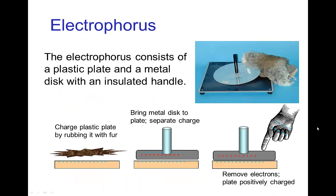We can use electrostatic induction to actually charge an object by first separating the charge to one side and another in a conductor, and then removing the charge from one side, leaving charge on the other side.